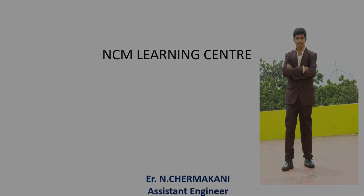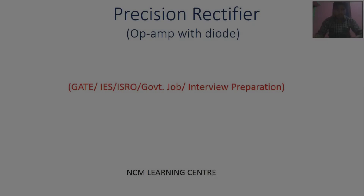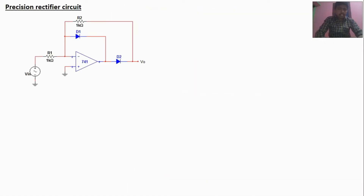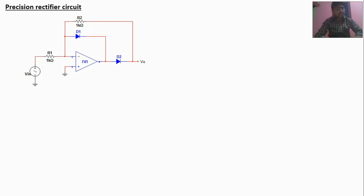Welcome to NCM Learning Center. Good morning friends. I am going to share a concept about precision rectifier. This is the precision rectifier circuit, where D1 and D2 are diodes and the input is AC input. In the last posted videos, I explained the op-amp diode concept for DC input cases. Here the input is AC input, and if you watch the last posted videos, this concept will be easily understandable.